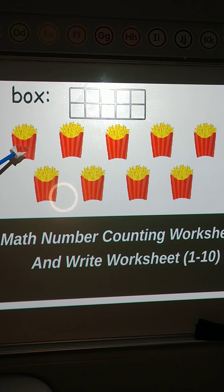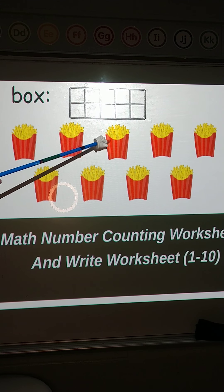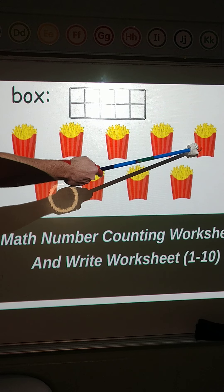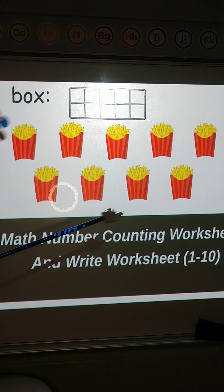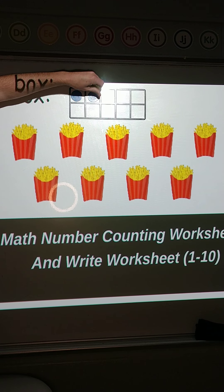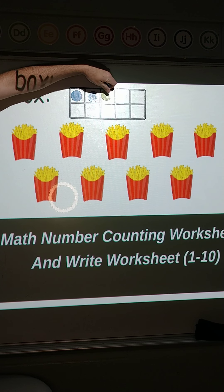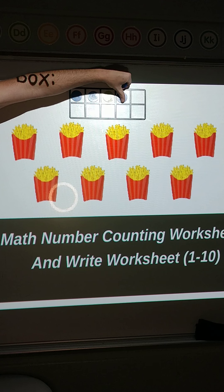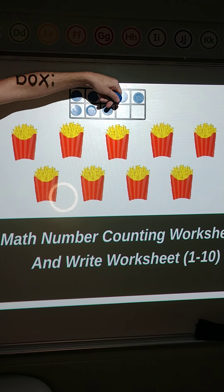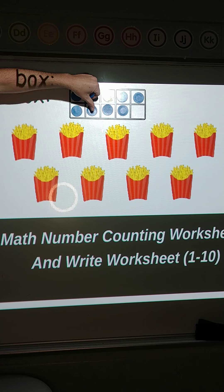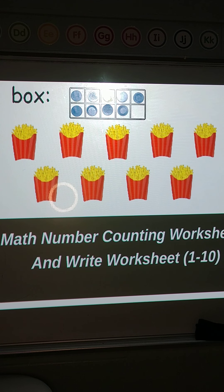So we have, let's count: one, two, three, four, five, six, seven, eight, nine. We have nine french fries, so we fill in our 10-frame. You always fill in the top row first and then you fill in the bottom row second. So we have nine, and you'll do this on your purple 10-frame sheet.